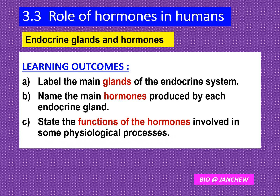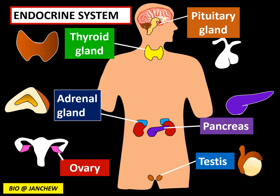In the previous video on the endocrine system, we introduced the six endocrine glands. You must know the location of each: the pituitary gland is in the brain, the thyroid gland is in the neck area. The adrenal gland is found above the kidney and looks like a triangle. The pancreas looks like a leaf and is found near the digestive system. The ovaries are found on the left and right side of the uterus, and the testes are a pair.